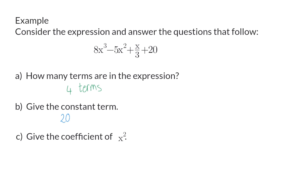Question C. Give the coefficient of x squared. The coefficient is that part of the term that is multiplied to the specific variable, and in this case, that will be minus 5.